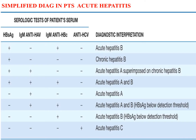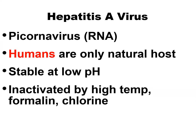Simplified diagnosis in patients with acute hepatitis: For acute Hepatitis A, we can find IgM anti-HAV — Hepatitis A virus.